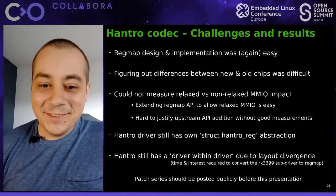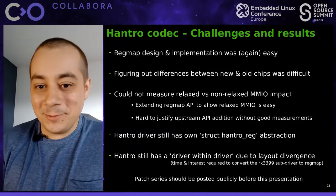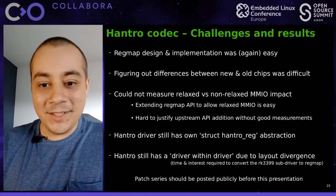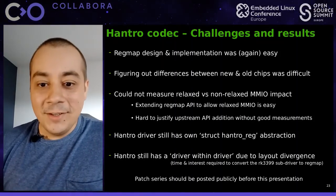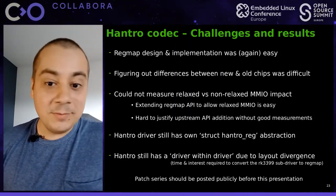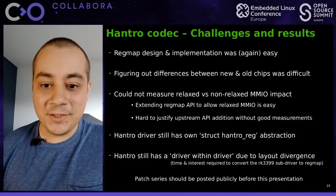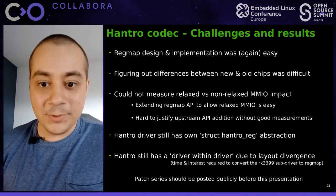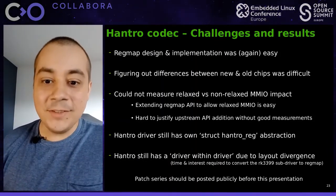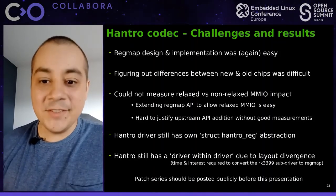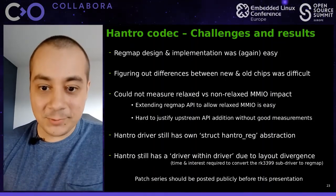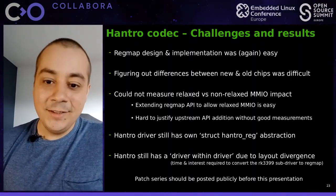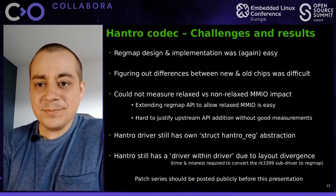Regmap upstream only has normal writes for the MMIO backend — no relaxed API. It's simple to add by setting a config flag, but you need a good reason to justify adding that API because it's not there upstream for a reason — nobody uses it, and we'd be introducing the first use case. You need a good reason with measurements. This is why the first patch will be an RFC asking whether it makes sense to add this MMIO relaxed interface to regmap.